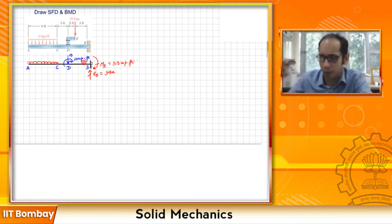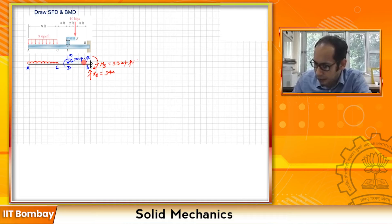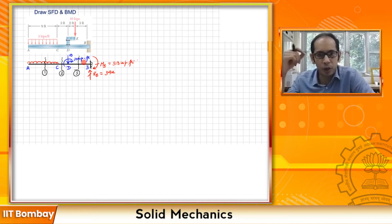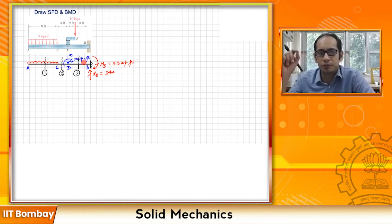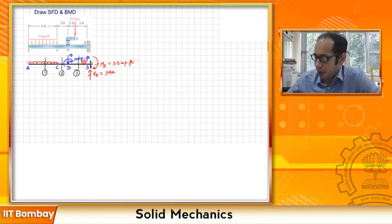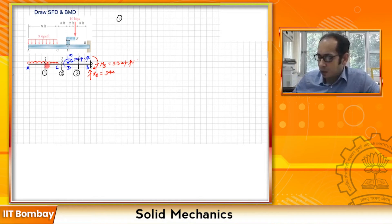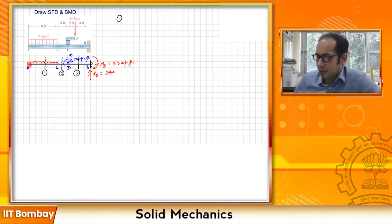Let us mark those sections. Section 1 is somewhere between A and C, section 2 is between C and D, and section 3 is between D and B. For these three sections, we have to draw the free body diagrams and write the expressions for V and M. Let us first deal with section 1, going from left to right starting from A.